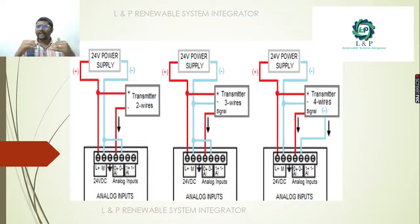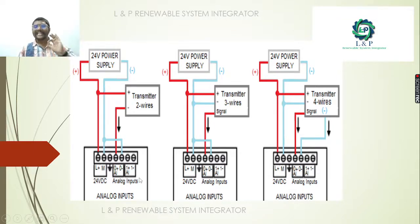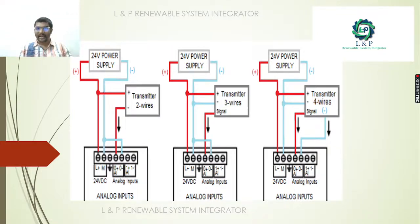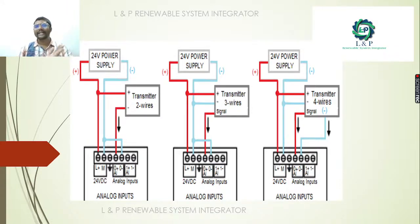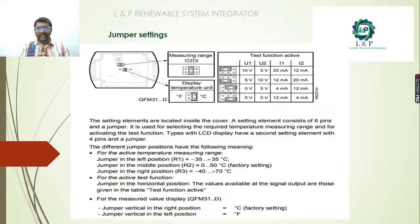For temperature transmitters, the connection can be two-wire, three-wire, or four-wire. For the device and module to operate, you need a 24V DC supply — both positive and negative. Based on the number of wires, you make the connections accordingly. This is a simple example of how two-wire, three-wire, and four-wire transmitters are wired with analog input modules.